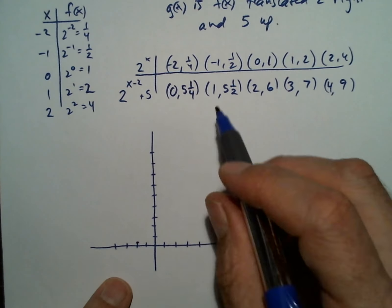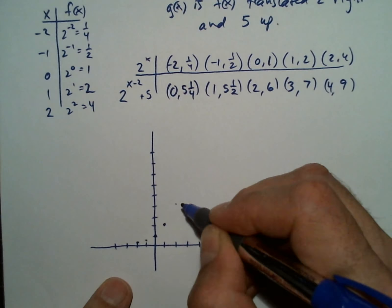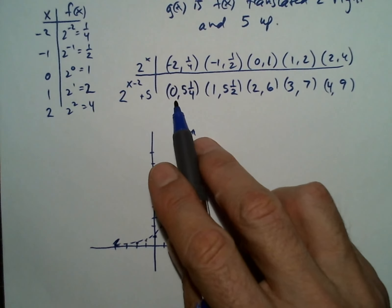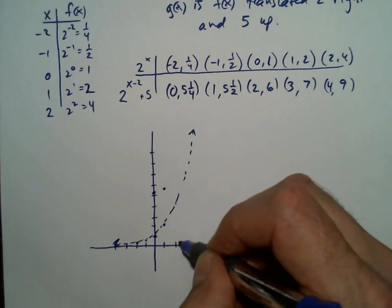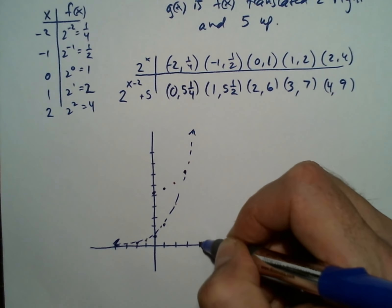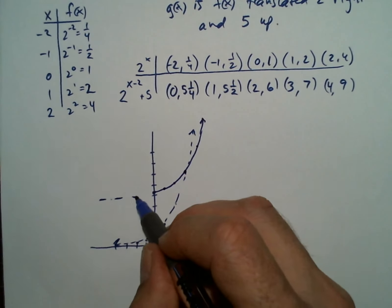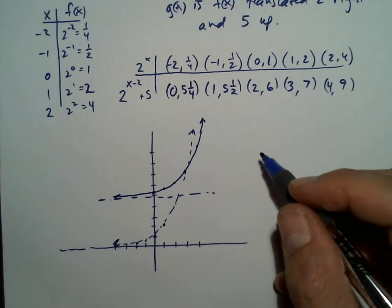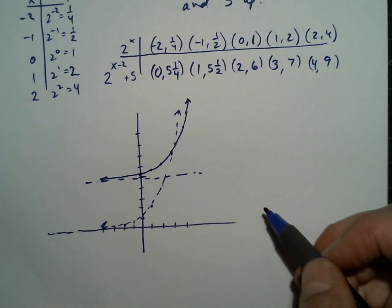The parent function points are (−2, 1/4), (−1, 1/2), (0, 1), (1, 2), (2, 4). Then we plot the transformed points: (0, 5¼), (1, 5½), (2, 6), (3, 7), (4, 9). We also see there's an asymptote on the parent function, and it got translated up 5 — so we count 1, 2, 3, 4, 5 and that'll be the horizontal asymptote.